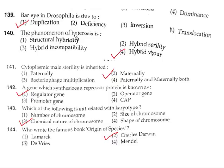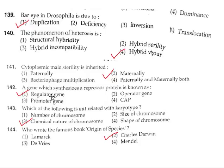Question 140: The phenomenon of heterosis is called hybrid vigor. Correct answer is option 4. Question 141: Cytoplasmic male sterility is inherited maternally. Question 142: A gene which synthesizes the repressor protein is called a regulator gene. Option 1.